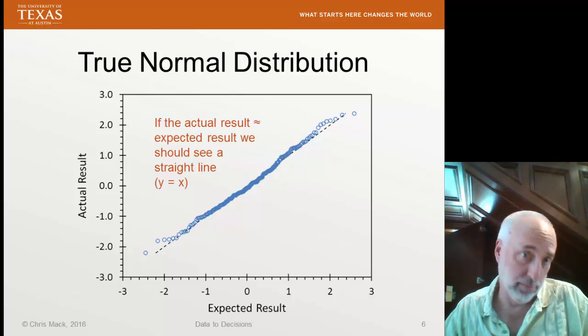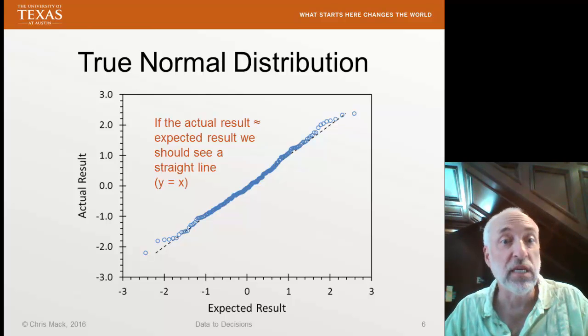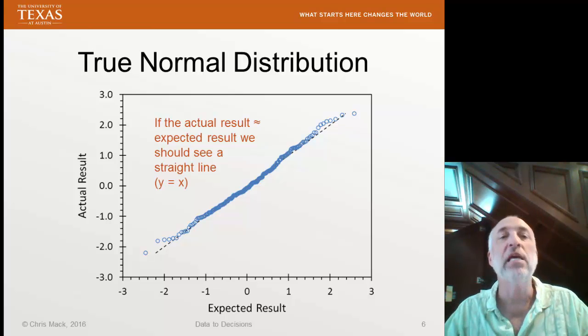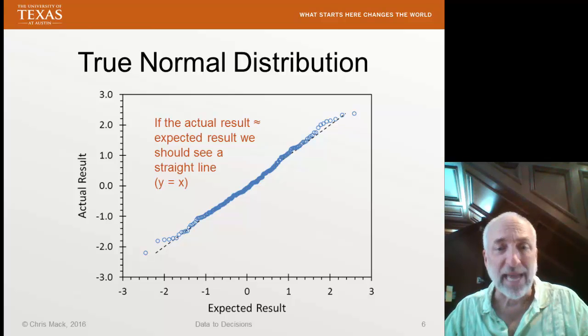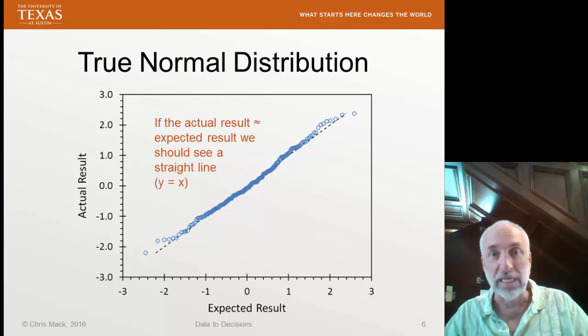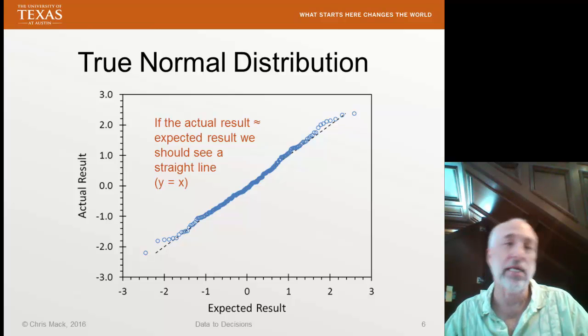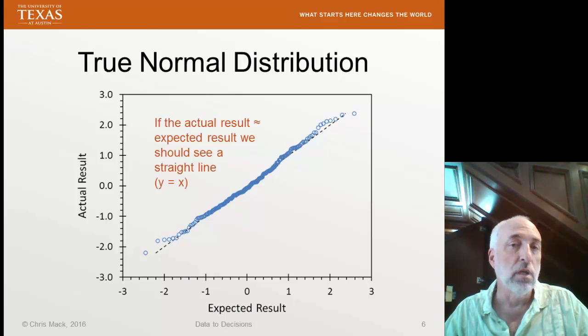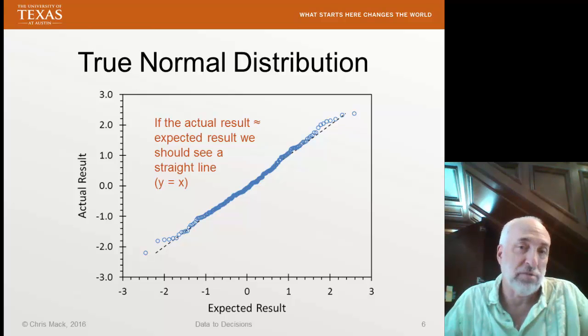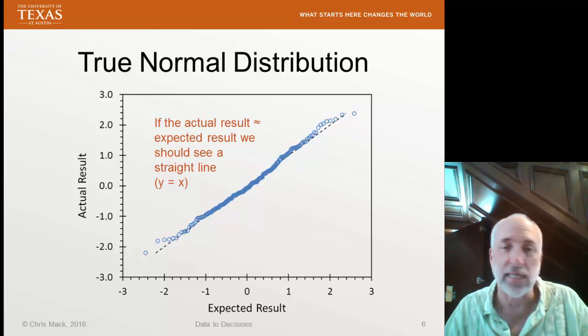What will happen? If the, here's a plot of residuals from an ordinary least squares fit. If the residuals are normally distributed and we calculate an expected result the way I just mentioned, assuming a normal distribution, that is, we use the inverse normal distribution to calculate the expected result, then we should expect to see a straight line, y equals x. That is, you expect the actual result to equal the expected result if everything is working exactly like that.